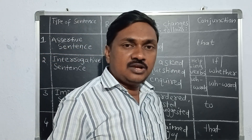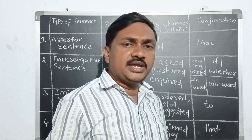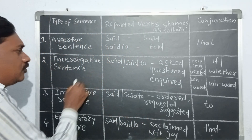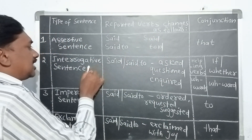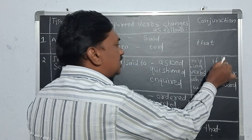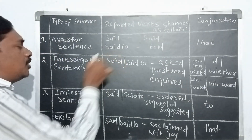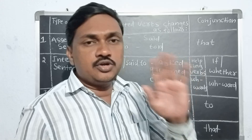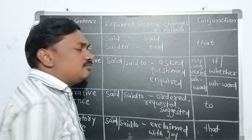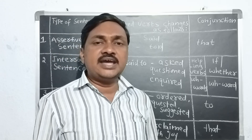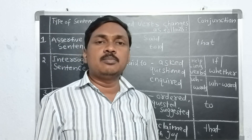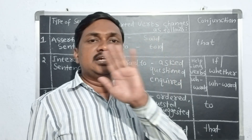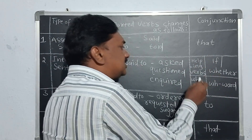There are two types of interrogative sentences: those that begin with a helping word, and those that begin with a WH-word. If the subordinate clause has an interrogative sentence which begins with a helping word, we use the conjunction 'if' or 'whether'. If the subordinate clause has an interrogative sentence which begins with a WH-word, no other conjunction is used — the WH-word itself serves as the conjunction.